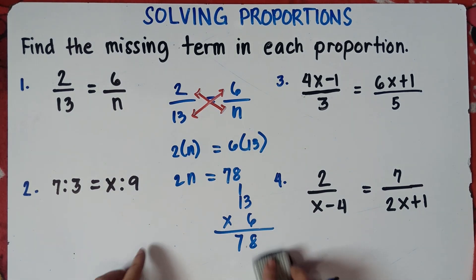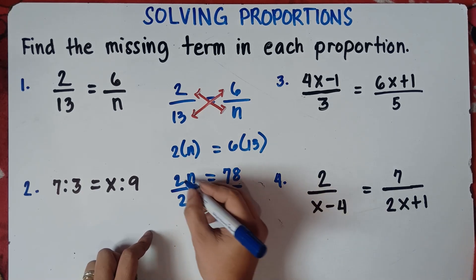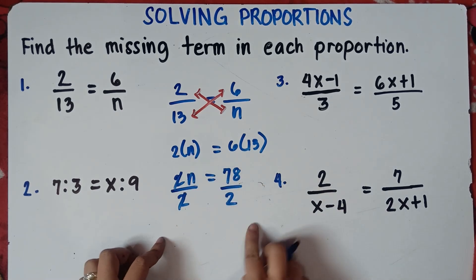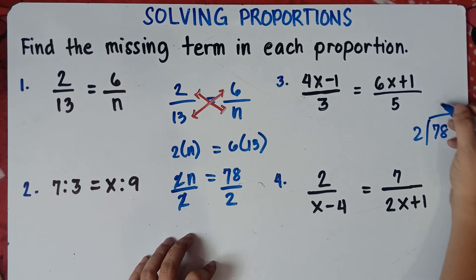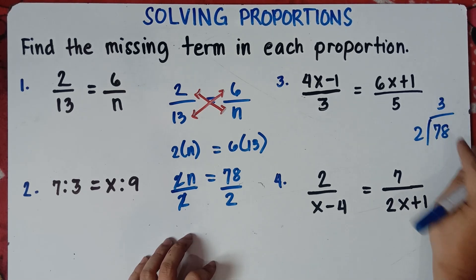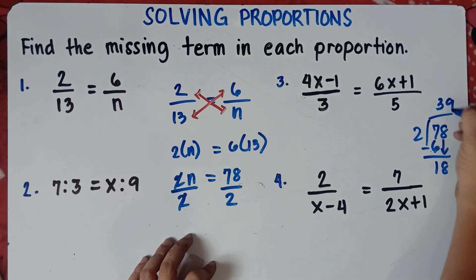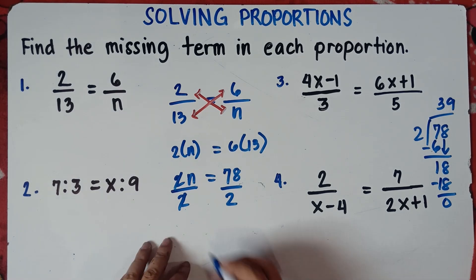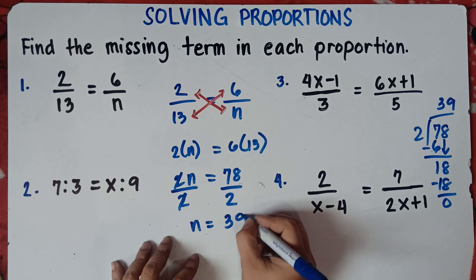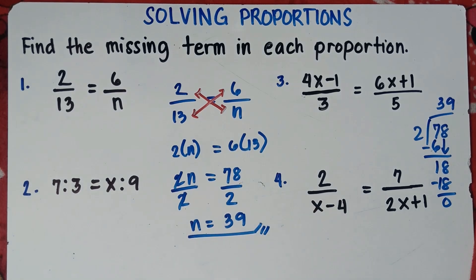To get the value of n, we divide both sides by 2. Cancel this out. 78 divided by 2: 7 divided by 2 is 3, 3 times 2 is 6, subtract — 7 minus 6 is 1, bring down 8; 18 divided by 2 is 9, 9 times 2 is 18, subtract — this is 0. So the answer is 39. Therefore, n is 39.